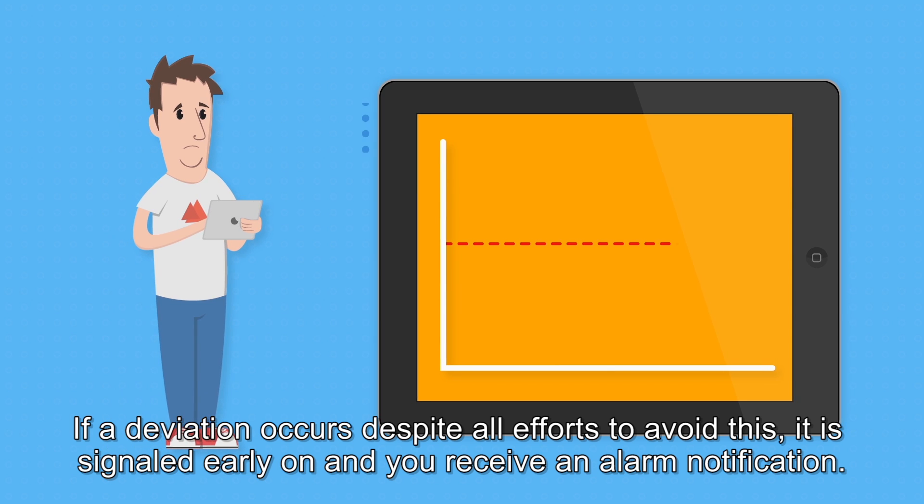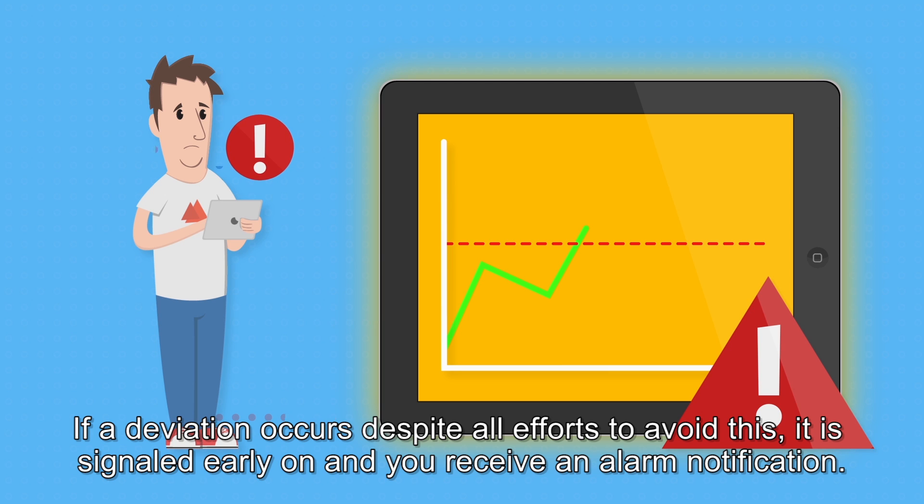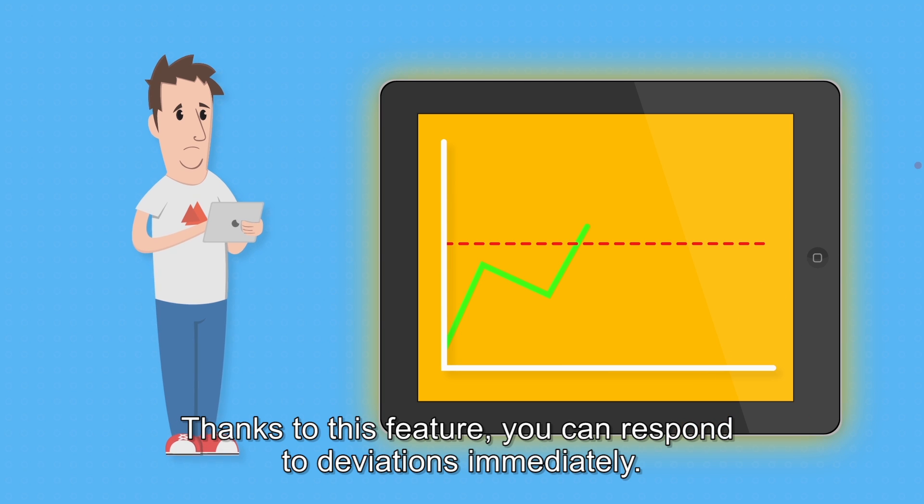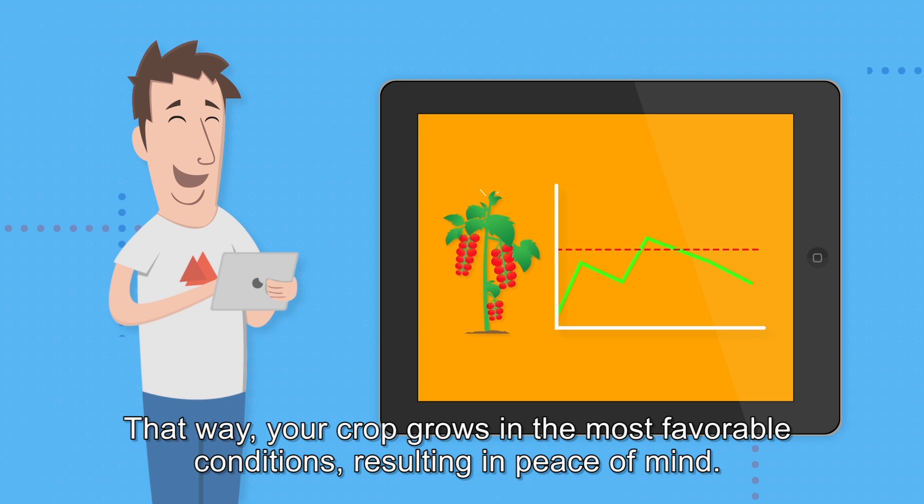If a deviation occurs despite all efforts to avoid this, it is signalled early on and you receive an alarm notification. Thanks to this feature, you can respond to deviations immediately. That way, your crop grows in the most favourable conditions resulting in peace of mind.